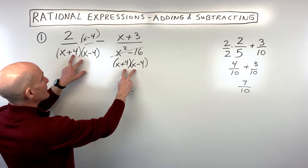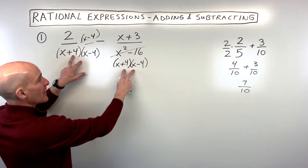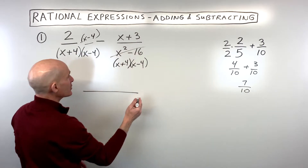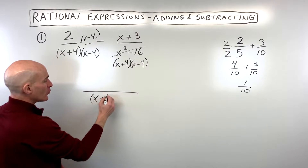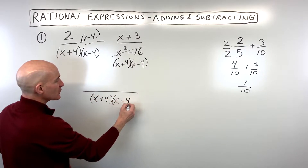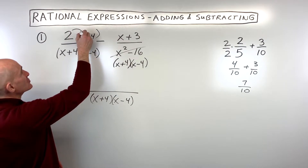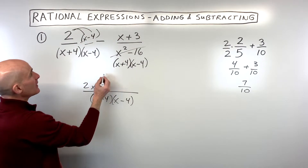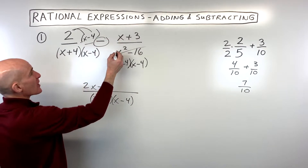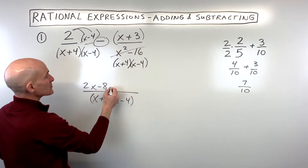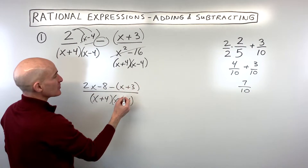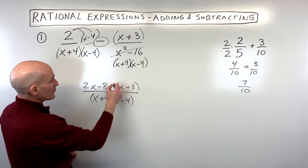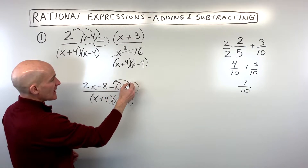Now you can see we have that common denominator of x plus 4, x minus 4. So we're going to combine this into one fraction with that common denominator of x plus 4 times x minus 4, and then we're going to simplify. We have 2x minus 8 minus — and this is important — we're subtracting, so it's this whole thing that's being subtracted. So minus the quantity x plus 3. You want to put that in parentheses to treat it as a group.